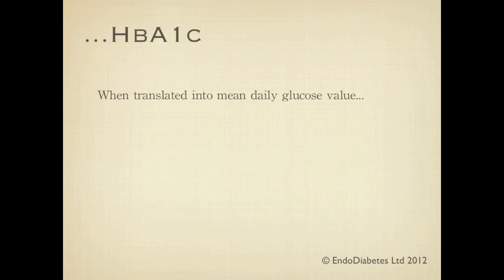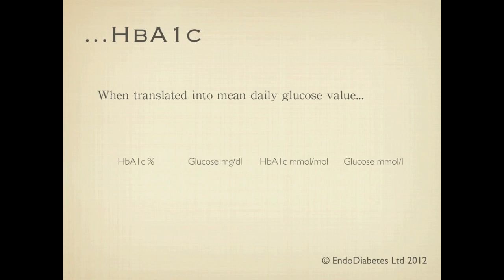How does HbA1c translate into average glucose over a day? Before going through the table, it is worth noting that there are two measuring systems for both HbA1c and glucose. In the first two columns, HbA1c is given as a percentage of hemoglobin and glucose is measured as milligrams per deciliter — methods used in the US. On the right side of the table, HbA1c is given as millimoles per mole according to the recent IFCC recommendation, and glucose as millimoles per liter, which is in SI units.